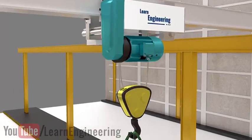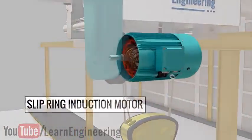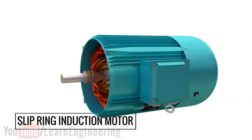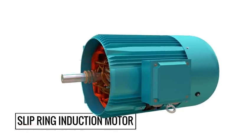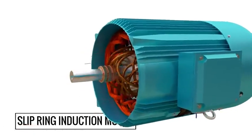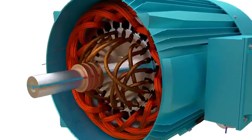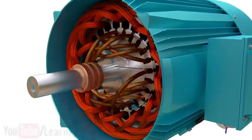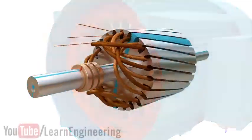To overcome this problem, the slip ring induction motor comes into the picture. The working principles and stator construction of the slip ring induction motor are exactly the same as that of a squirrel cage motor. However, the rotor construction of the slip ring motor is quite interesting.